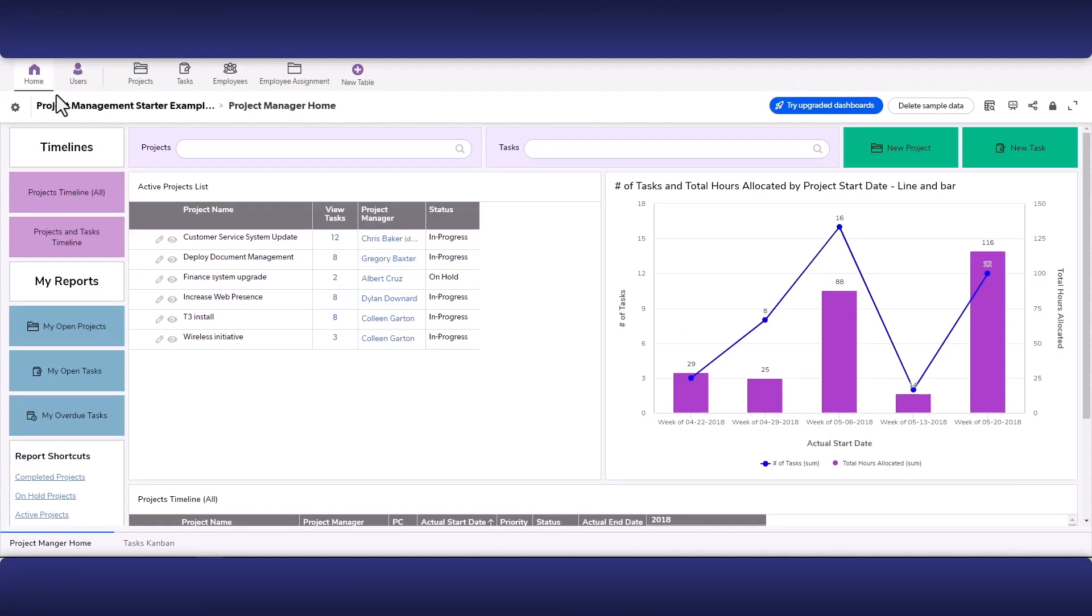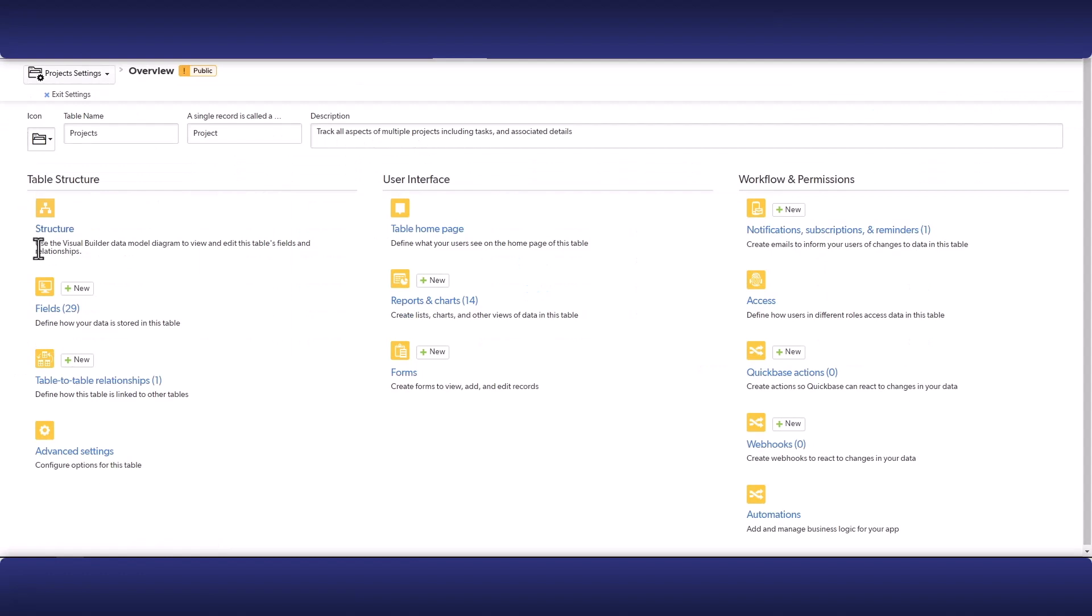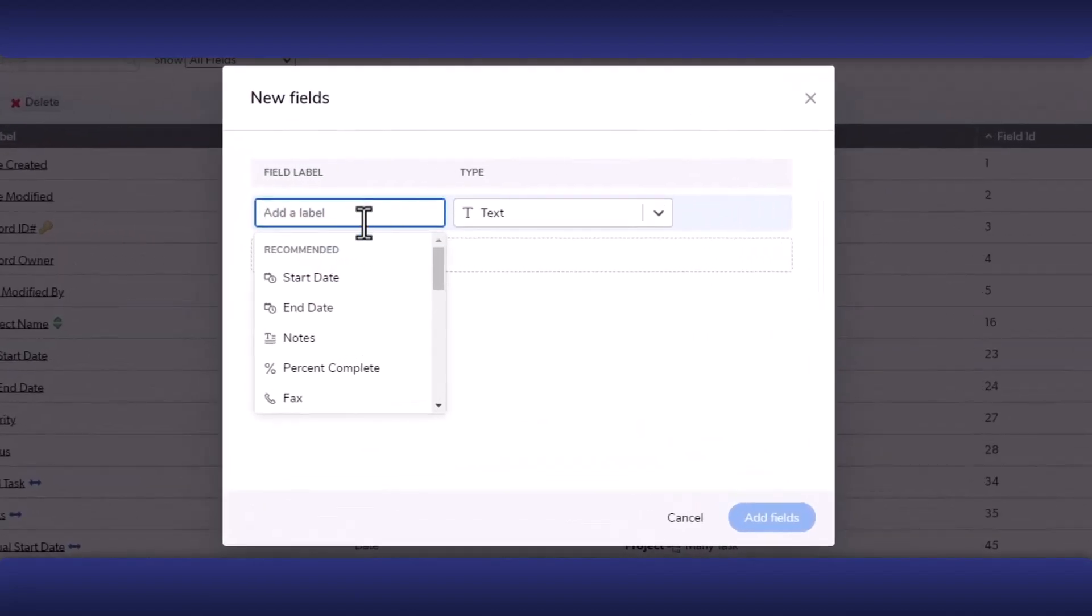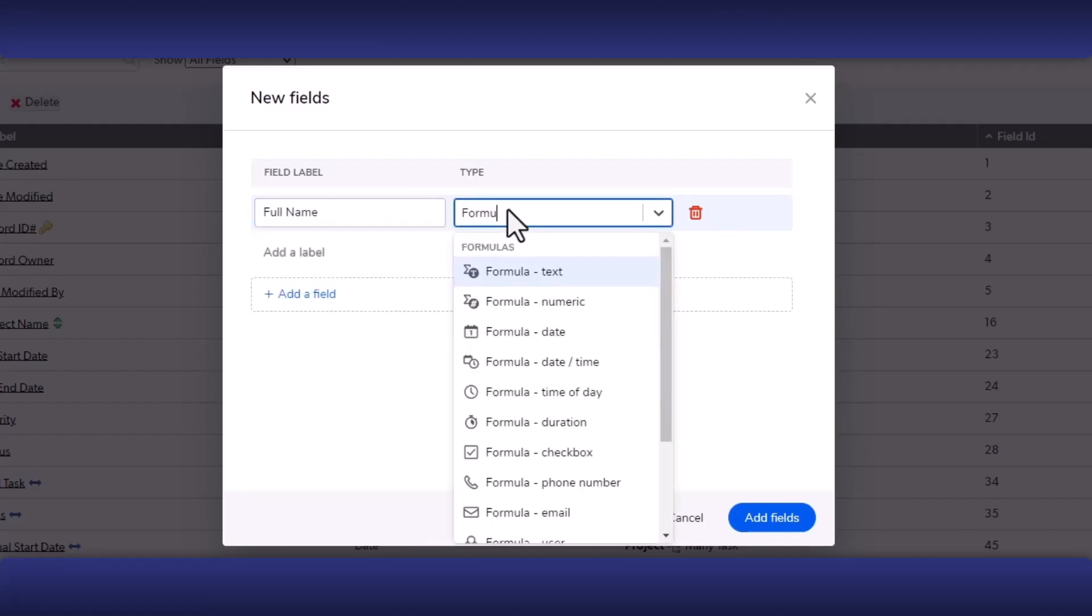Let's cover how to create a formula field. Go to the table you would like to create a field in, and then go to the settings gear. Now, go to Fields. Next, click the New Fields button on the top right. Now we are presented with the New Field dialog. From here, we can create as many different fields as we want. You can type in the name of your field on the left side. Then you can type in formula on the right side to get a list of different types of formula fields.